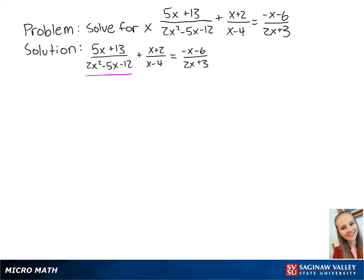First, we can factor out the denominator of the first fraction. Now we have 5x plus 13 over x minus 4 times 2x plus 3 plus x plus 2 over x minus 4 equals negative x minus 6 over 2x plus 3.